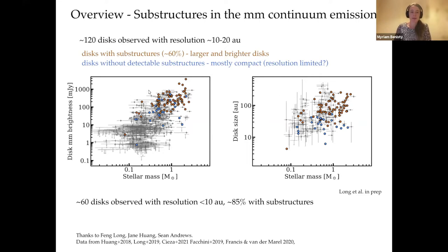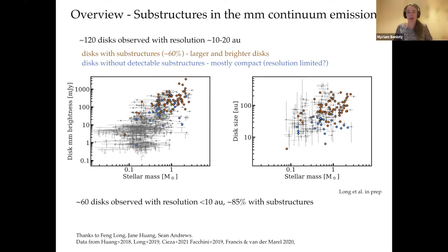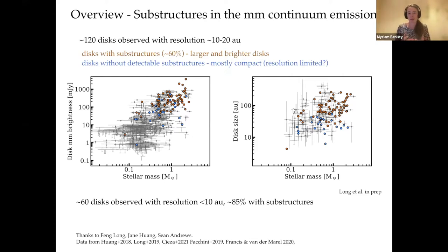The disks we observed that do not show detectable substructures can also be bright — that's one of our observational biases, we only look at bright disks. But they are in general very compact.